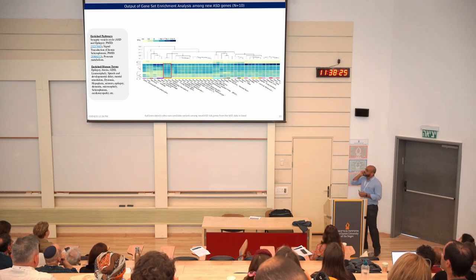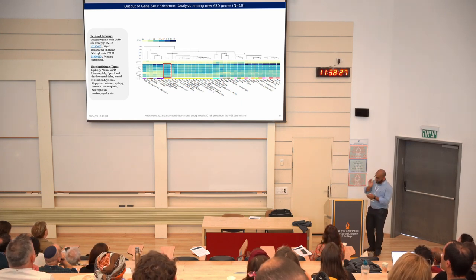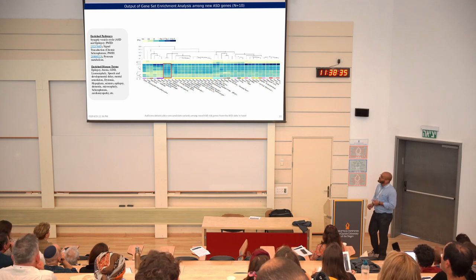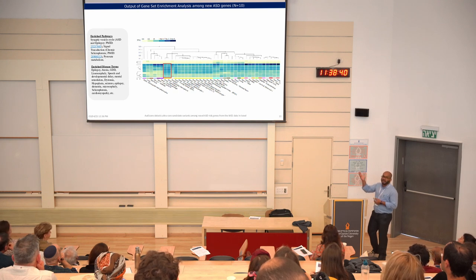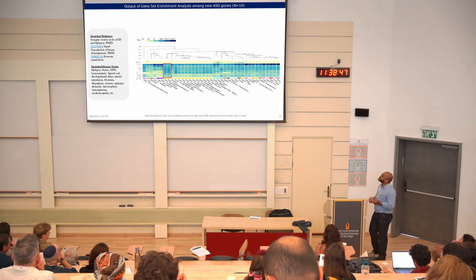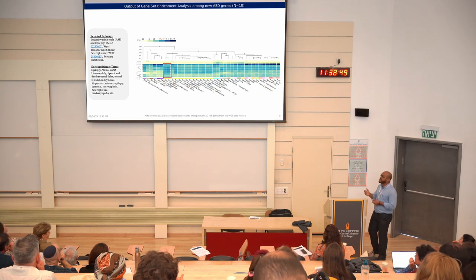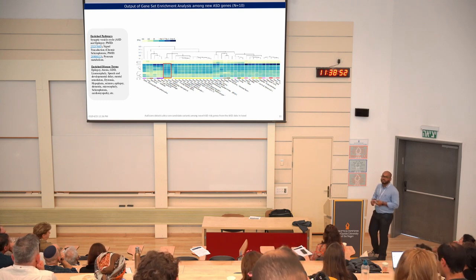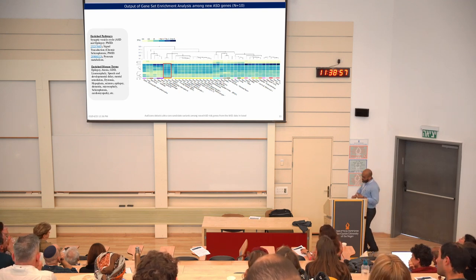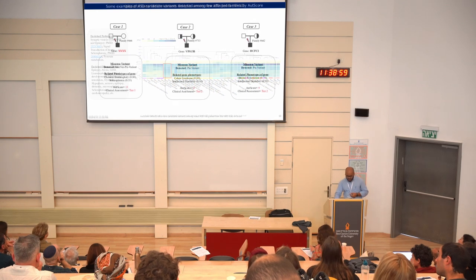We ran a tissue expression analysis where we found that these particular genes are mostly enriched in brain tissues. There are some other tissues as well — liver, kidney, heart — and we assessed them, but we don't know exactly what to make of that yet. More will be said on that when my colleague Ohad presents his project.